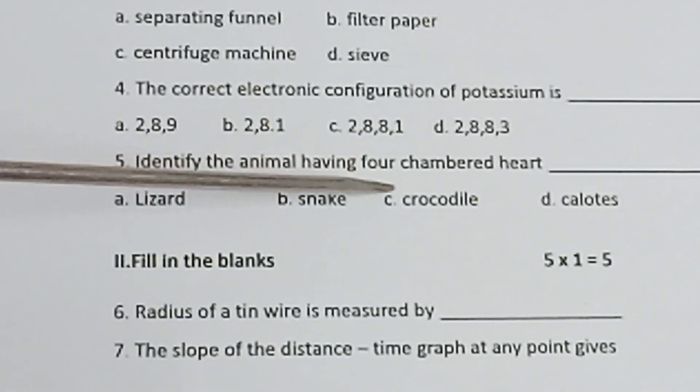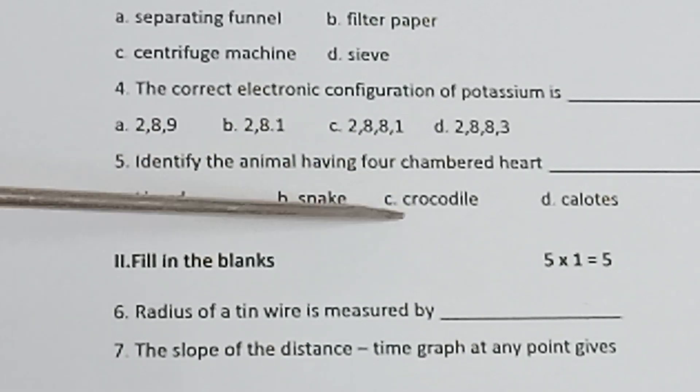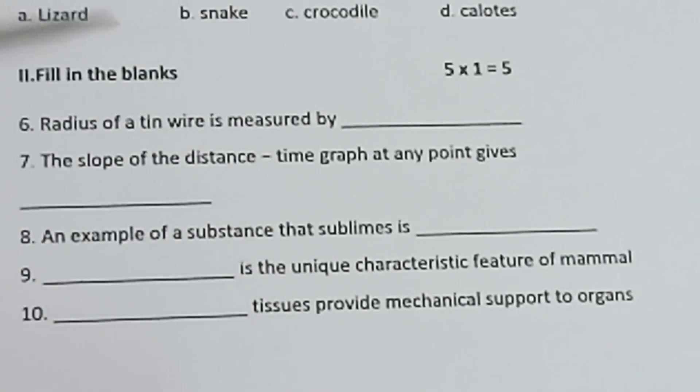Question 5: Identify the animal having four chambered heart: A) Lizard, B) Snake, C) Crocodile, D) Calotes.